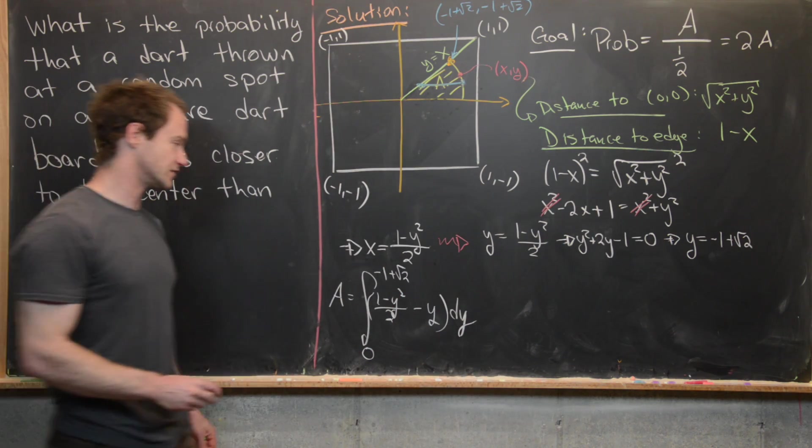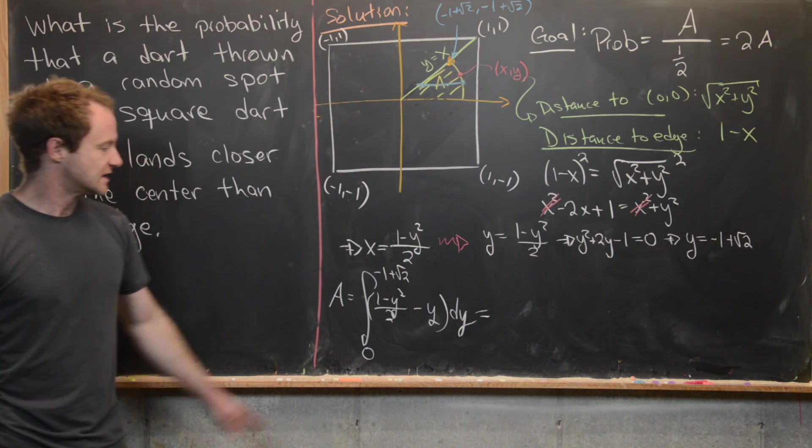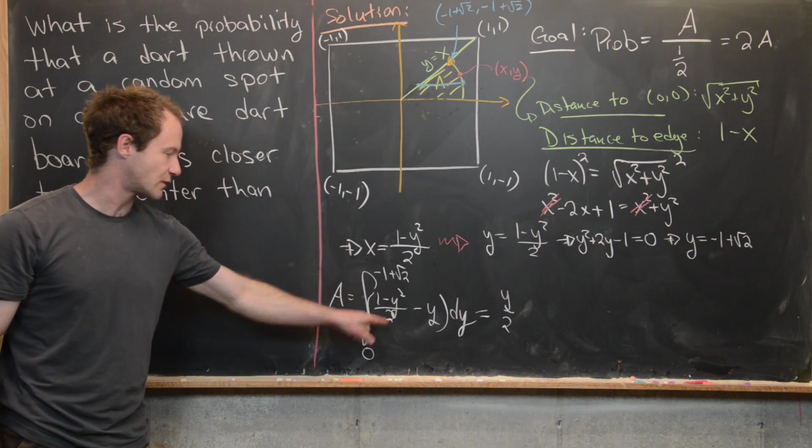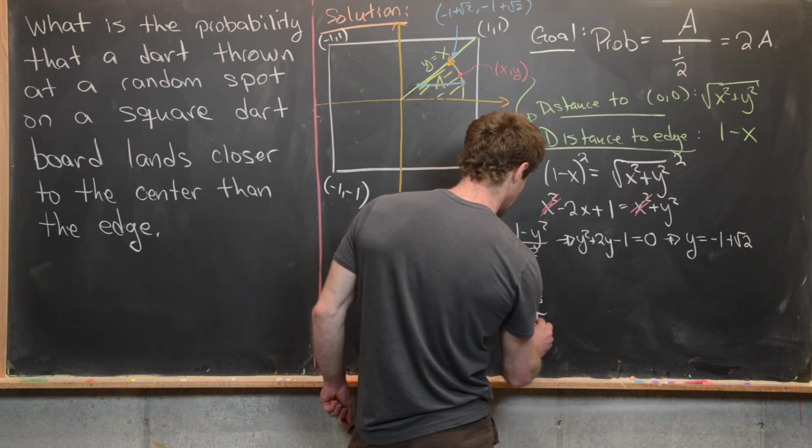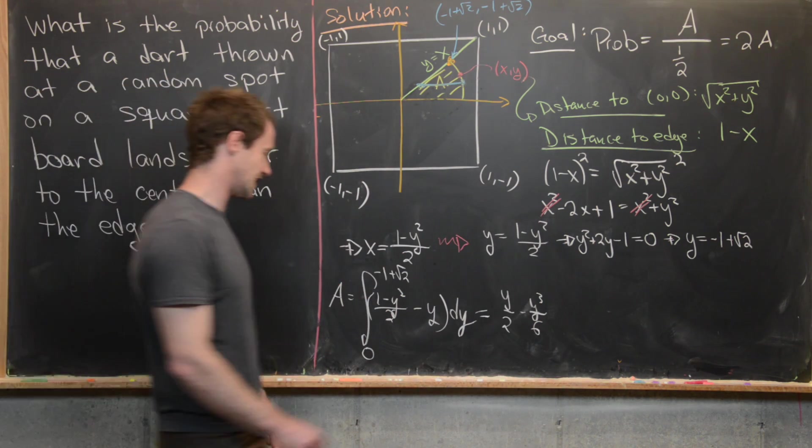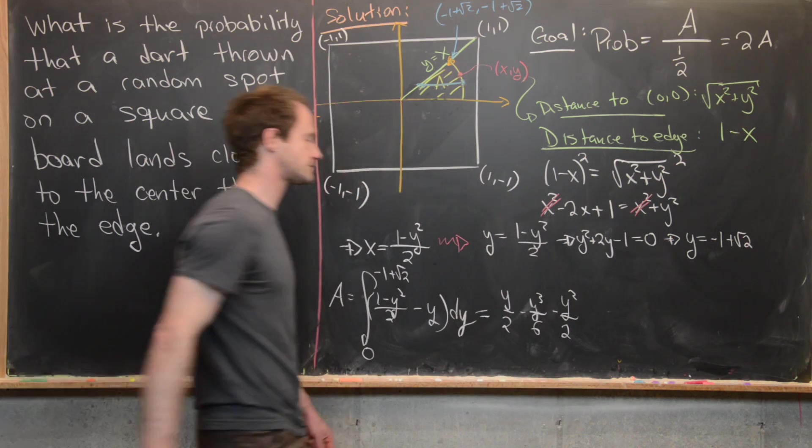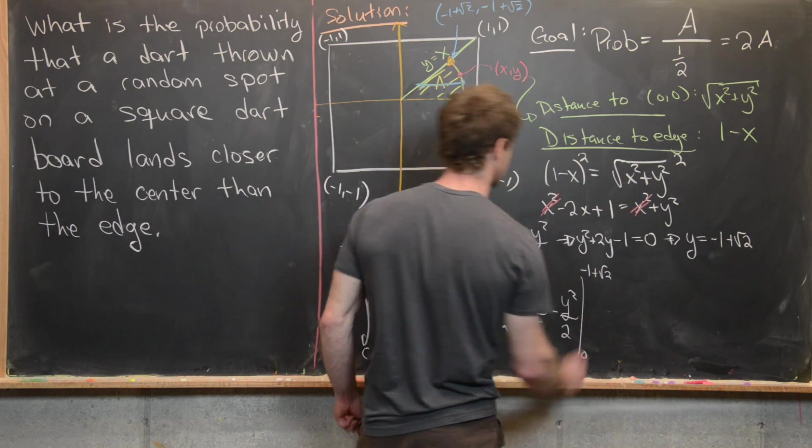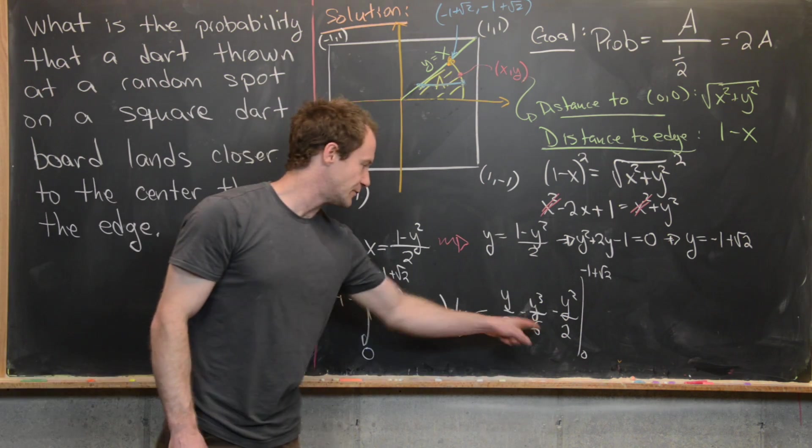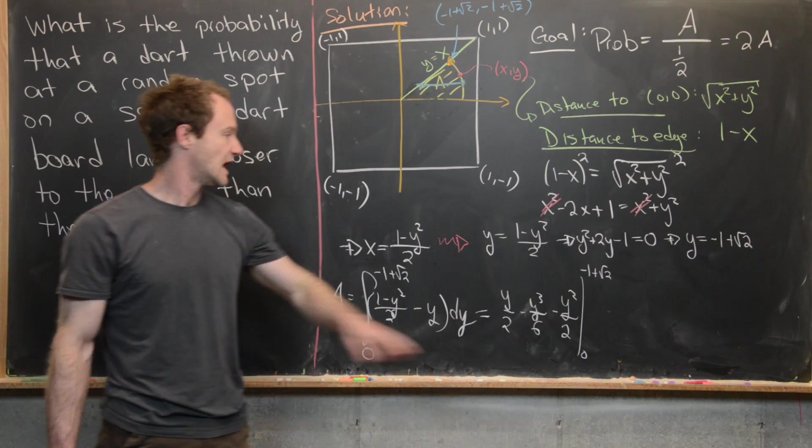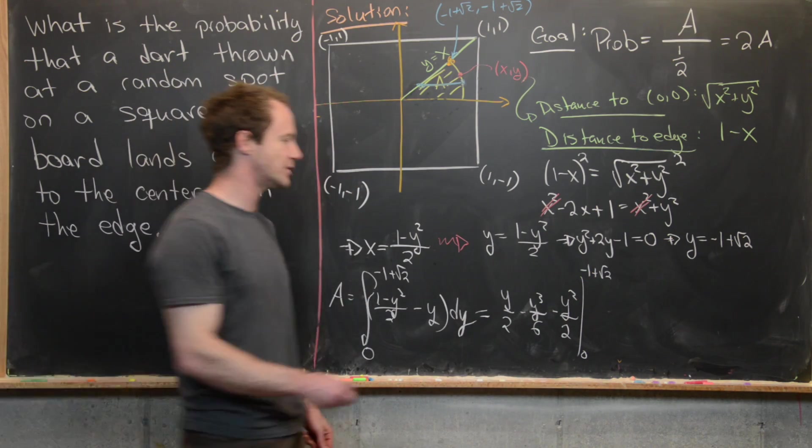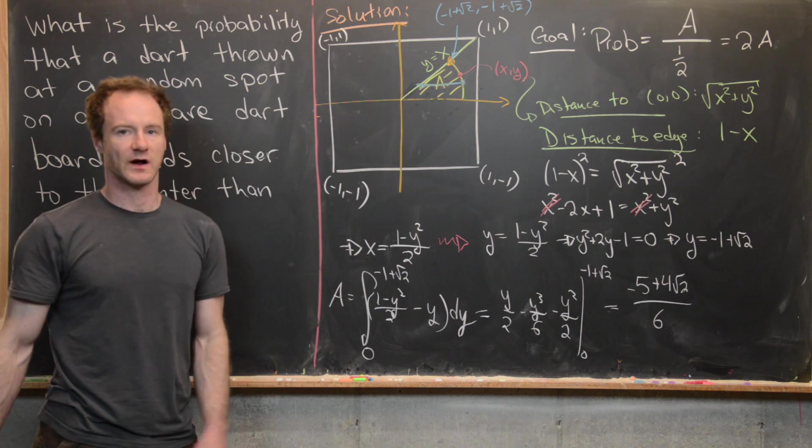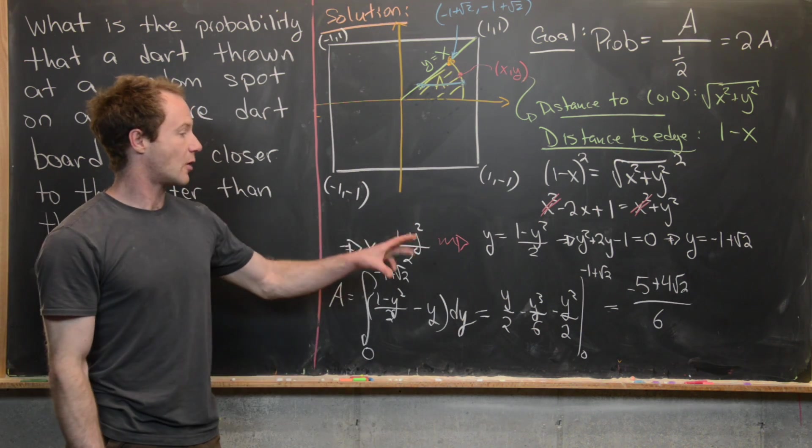Now it's just like taking the anti-derivative and plugging things in. So the fundamental theorem of calculus part one. So let's see what we get, we get a half. So that's going to integrate out to y over 2. And then next, we'll have minus y squared over 2. So that's going to integrate out to minus y cubed over 6. And the next minus y. So that's going to integrate out to minus y squared over 2. And so now we need to evaluate that at zero and at -1 + √2. But what you get if you plug in zero, you obviously just get zero. That's pretty easy to see. And then I'll let you guys check what you get when you plug in -1 + √2. But what you end up with is (-5 + 4√2) / 6. And so that's just some arithmetic. Now that is the area of this region.